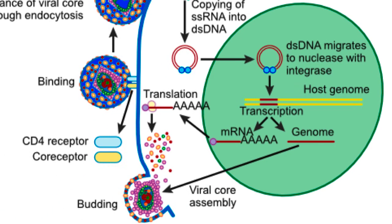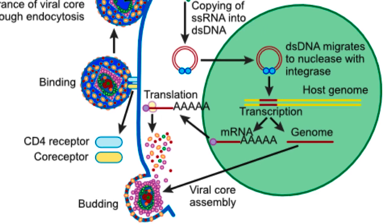In an active infection, expression of transcripts and splicing occurs, resulting in various messenger RNAs. These are expressed at the ribosome and either migrate back to the nucleus or are translated into the membrane if they are an envelope protein. Viral genomic RNA is made, associates with viral RNA-binding proteins in the cytoplasm to form viral cores, and the core, matrix, and envelope proteins then assemble at the membrane and bud from the cell.